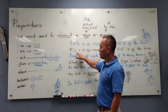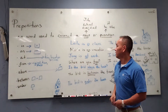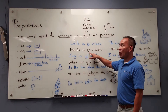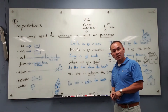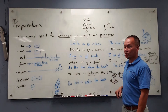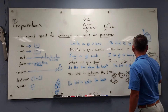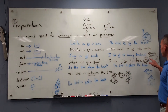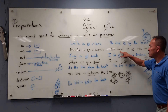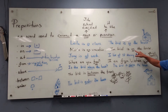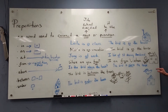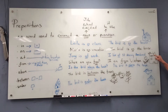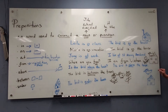Where is Maria? She is on vacation. She travels somewhere, so she is on vacation. Now you see here — the bird is on the house. This is a preposition. Where is the bird? The bird is right here. It's on the house.